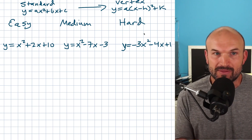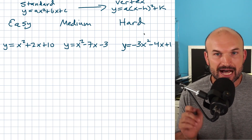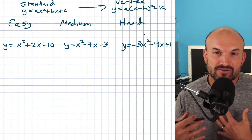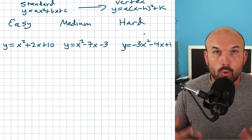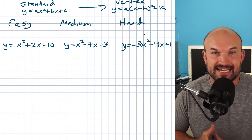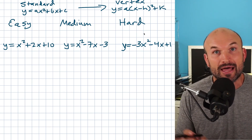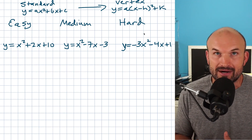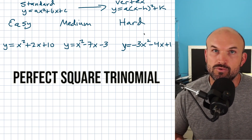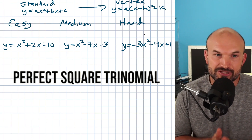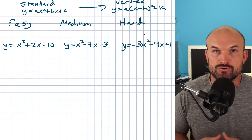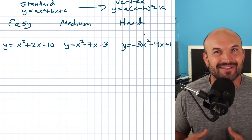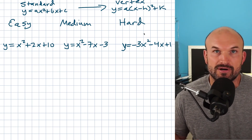Before we get into completing the square, there's one thing I really want you to pay attention to. Notice how the square changed — in standard form it was just x squared, but in vertex form we have a quantity being squared: x minus h squared, which is a binomial squared. When you take a binomial and square it, you produce what we call a perfect square trinomial. What we're actually going to do is create a perfect square trinomial — finding a value c that creates it. That is the process of completing the square.